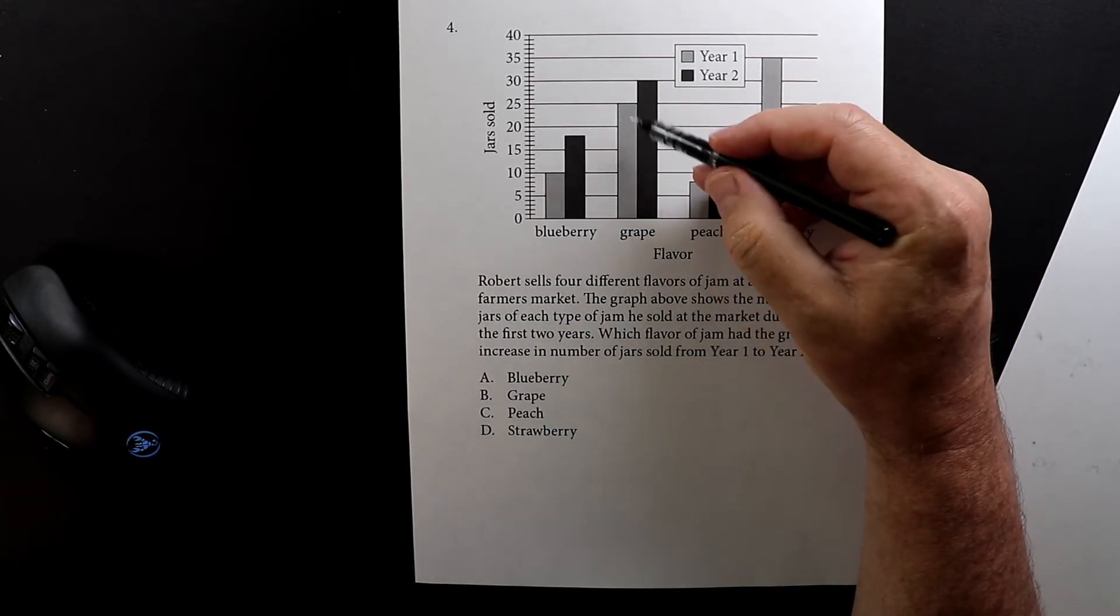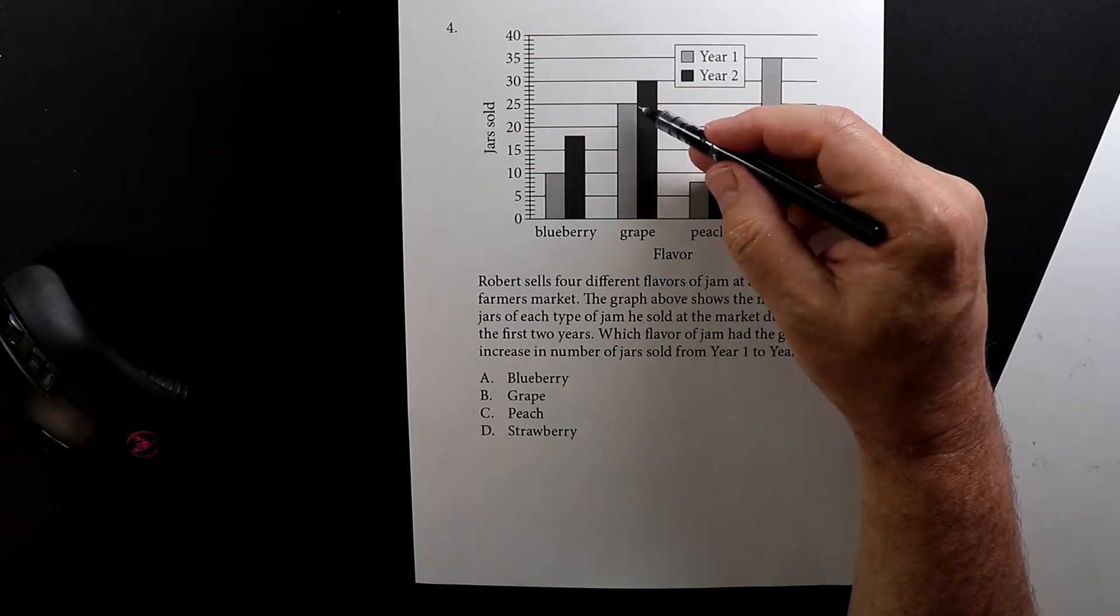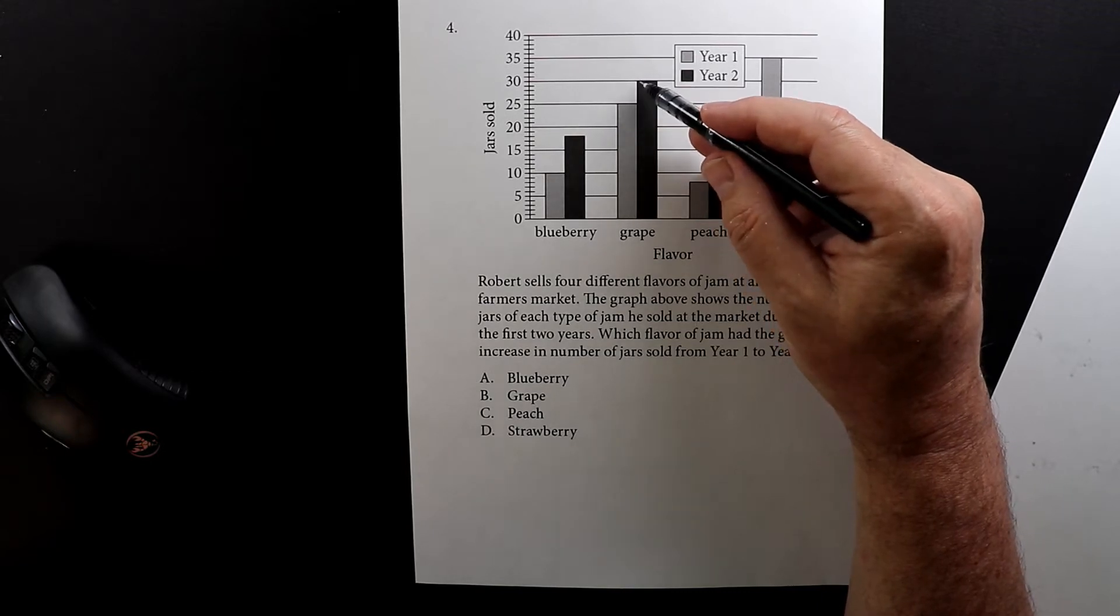Now let's look at grape jelly. So the first year he sold 25 and then the second year he increased five jars from 25 to 30.